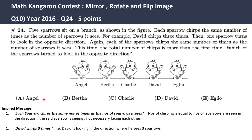These are the implied messages. The first one is each sparrow chirps the same number of times as the number of sparrows it sees. Which means the number of chirping is equal to the number of sparrows seen in the direction the said sparrow is looking. Not necessarily the sparrows are facing each other. This is important to note.